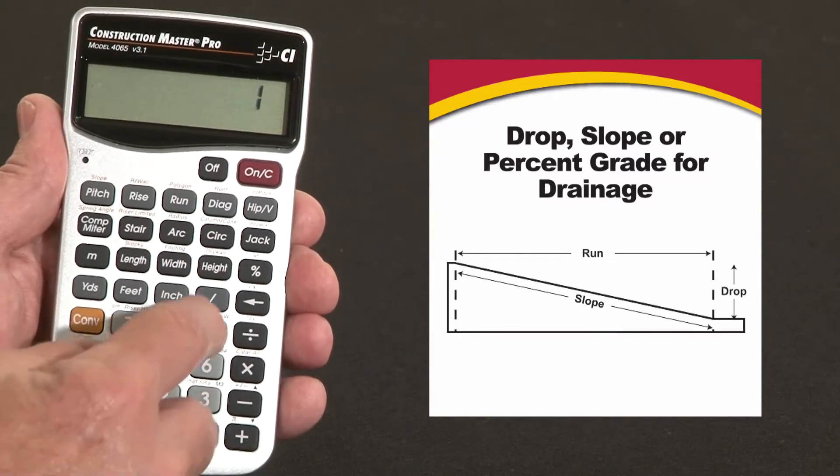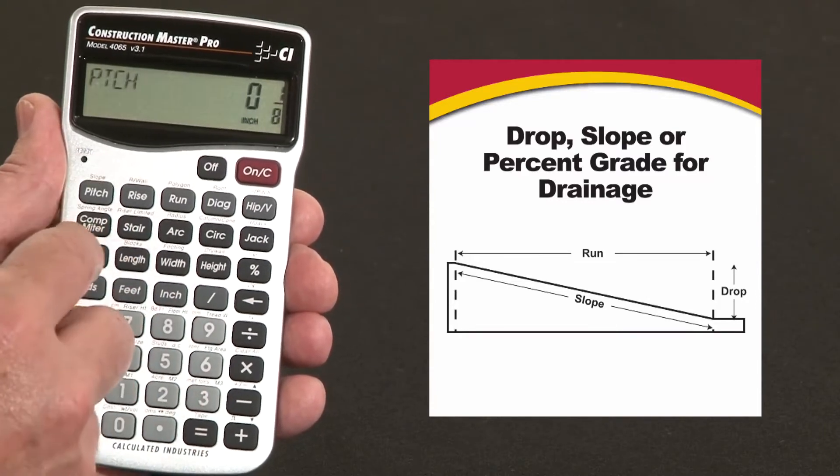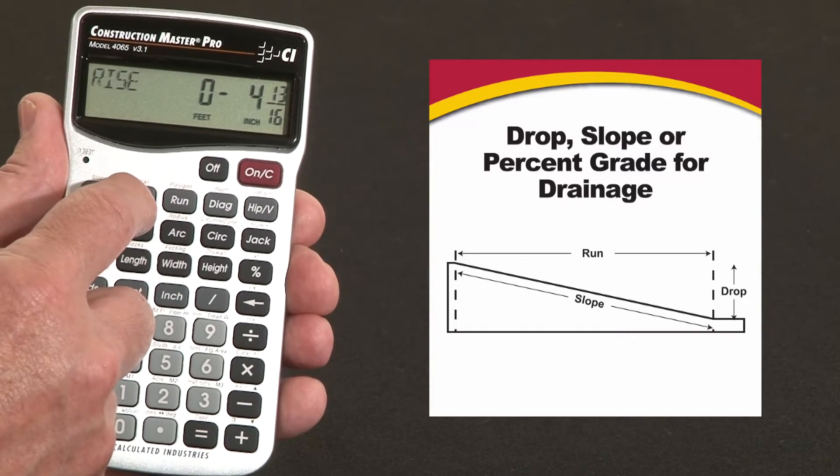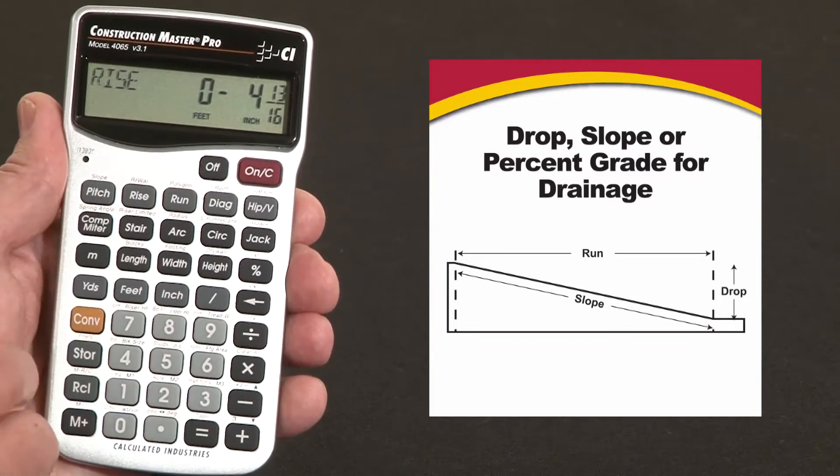What would it be at an eighth inch per foot? One eighth inch pitch. Now figure the rise. Four and 13/16 inches. Maybe that's more doable. We can go with that.